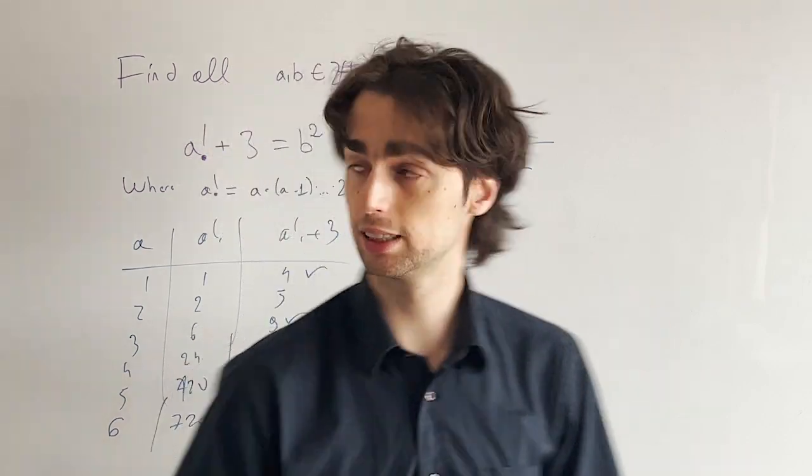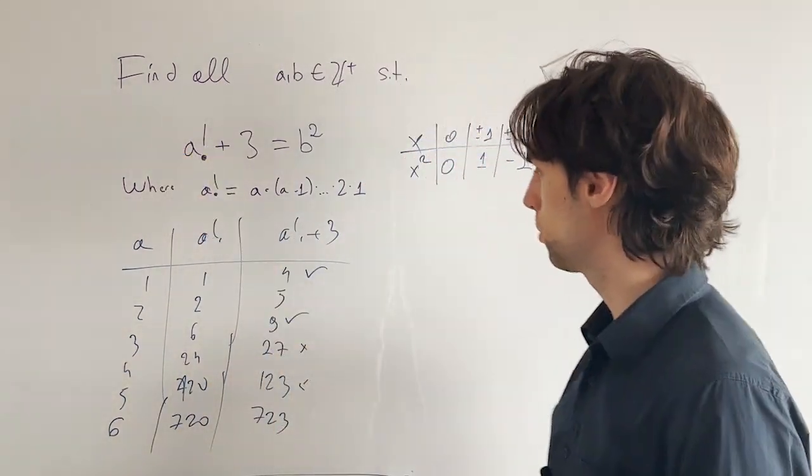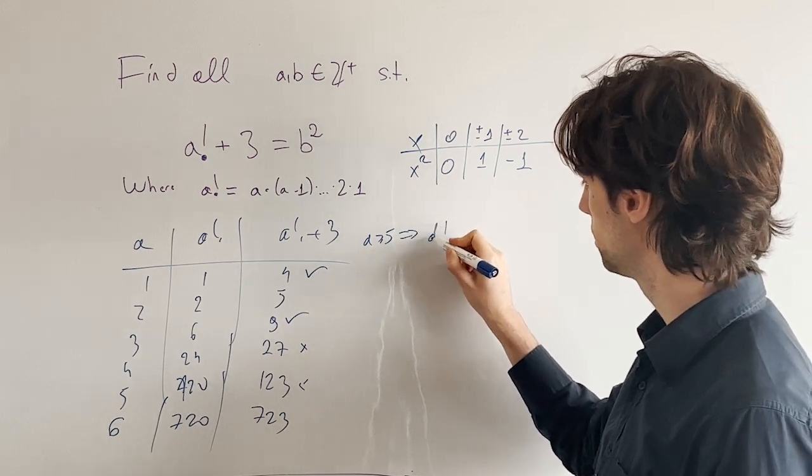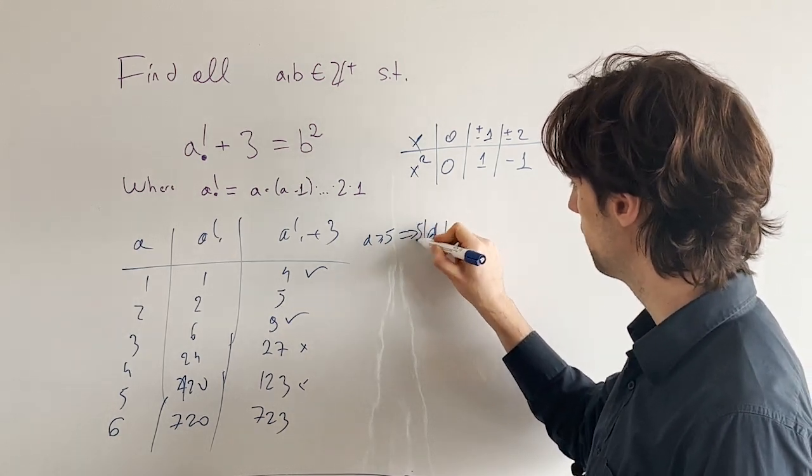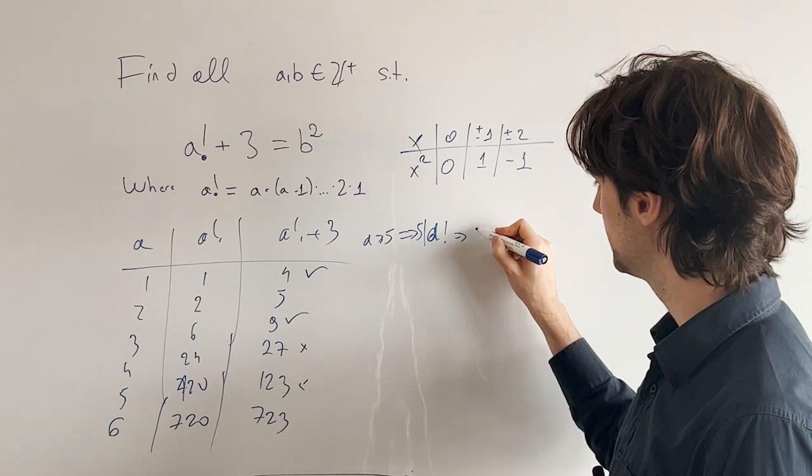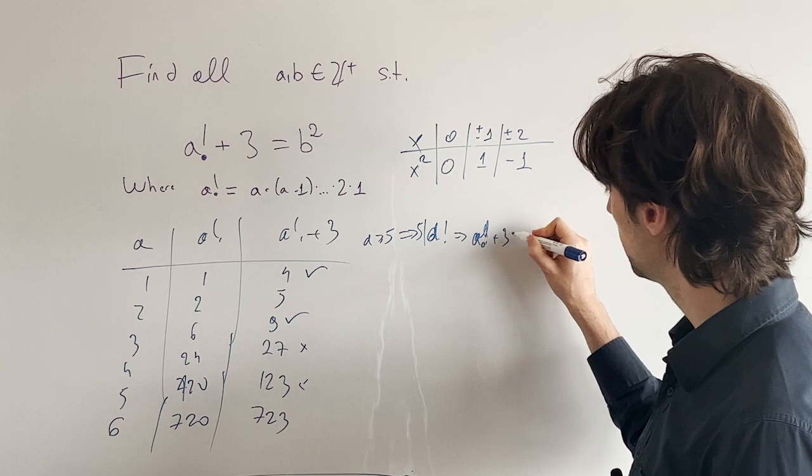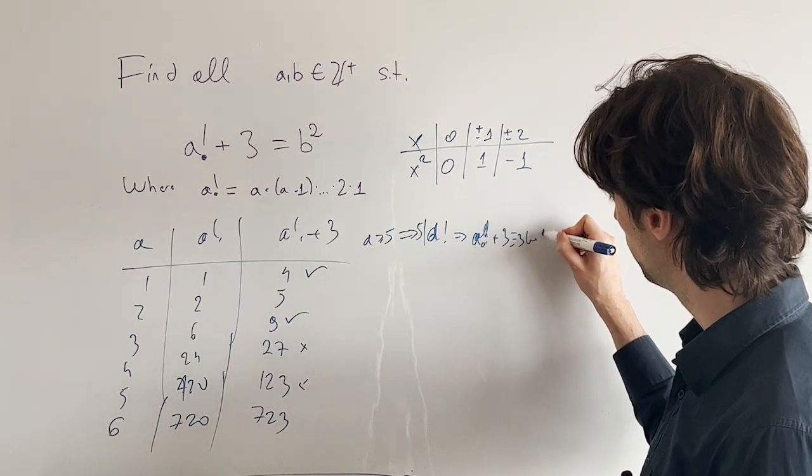So given this, if a factorial, if a is greater or equal to 5, that implies that a factorial is divisible by 5, which implies that a factorial plus 3 is congruent 3, modulo 5.